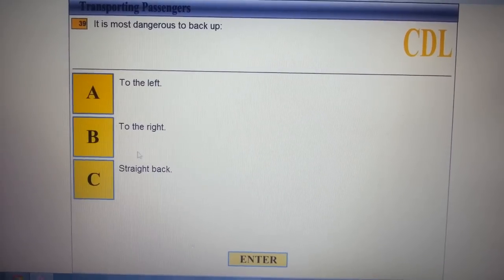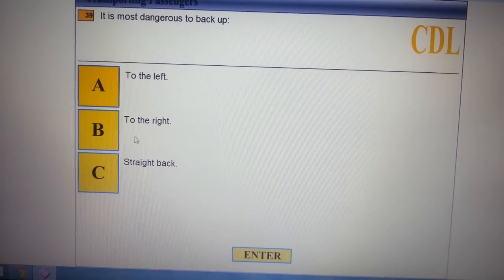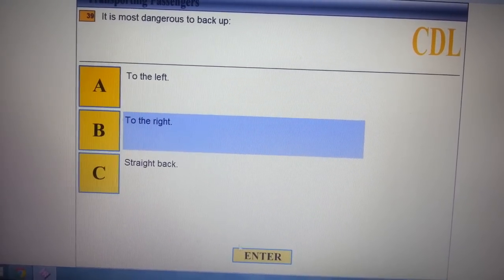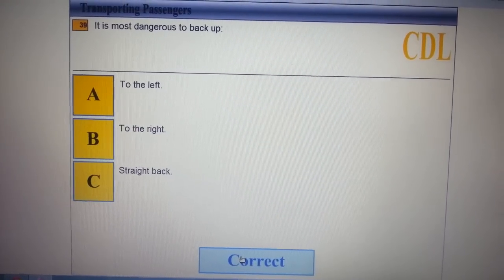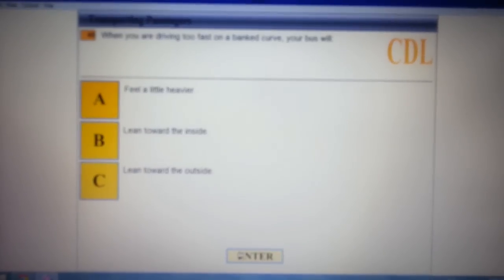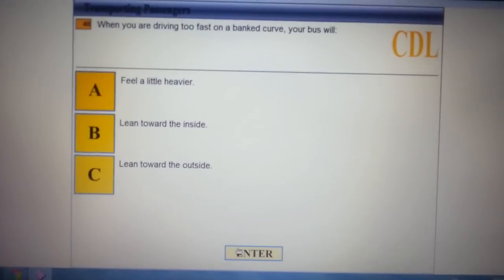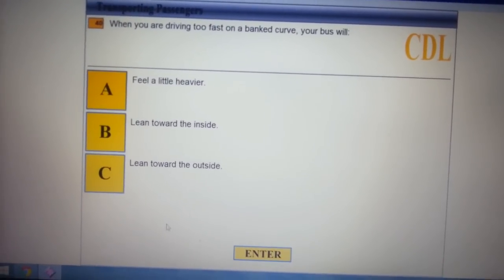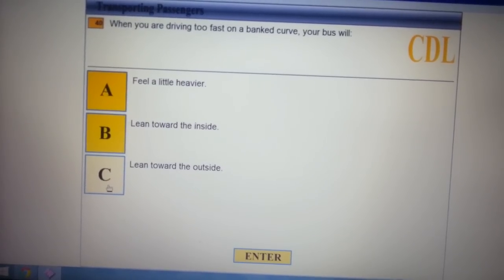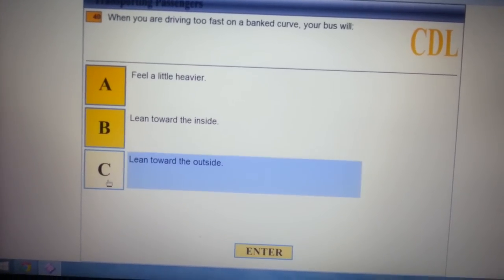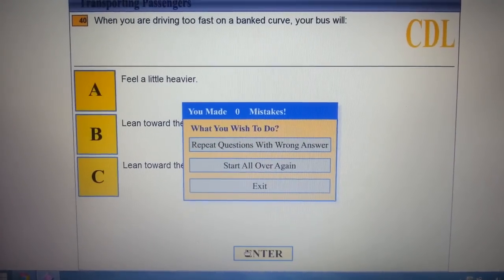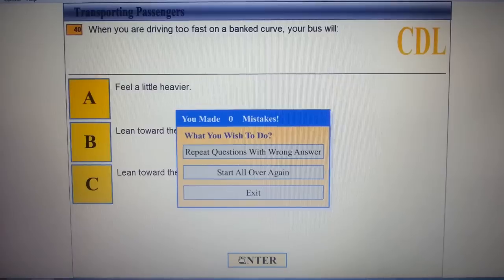We got 39 questions, we have like almost one question left. It's most dangerous to back up to the right, to the right side, because sometimes you can't see the cars next to you. When you're backing, your bus will swing to the outside, so be careful.